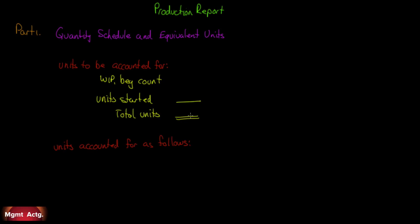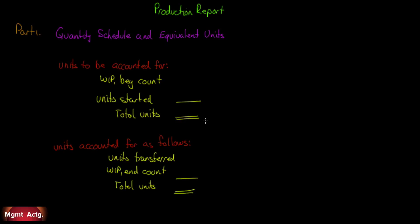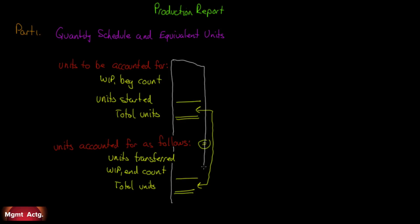If we have that many units we started with and that many units we added, they must have gone somewhere. We transferred some units, and what wasn't transferred must be in work in process ending inventory. The quantity schedule is just this — these two numbers must equal each other. The units to be accounted for must equal the units accounted for as follows. That whole column is called the quantity schedule, and it's really easy to do.